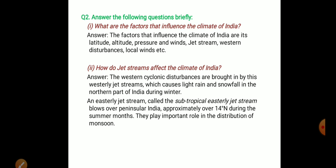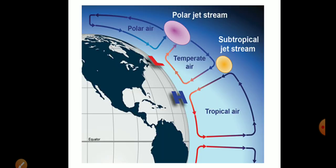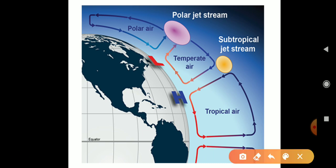How do jet streams affect the climate of India? The pressure patterns are important here — the equatorial area is low pressure and the polar region is high pressure.